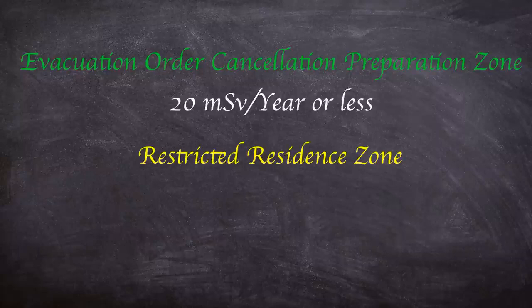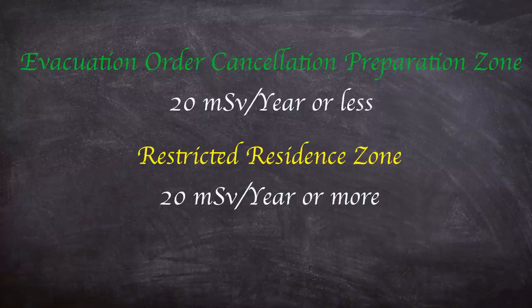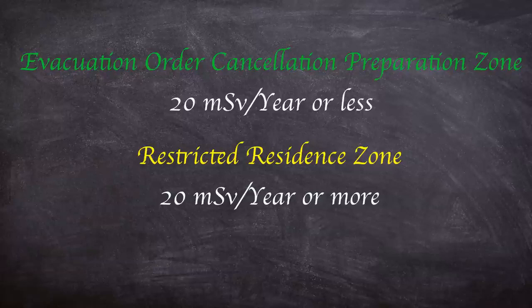Area 2 is where residents are not permitted to live, known as the restrictive residence zone. Areas where annual integral dose of radiation is expected to be 20 millisieverts a year or more and where residents are ordered to remain evacuated. Residents can also return to this area but not stay the night.